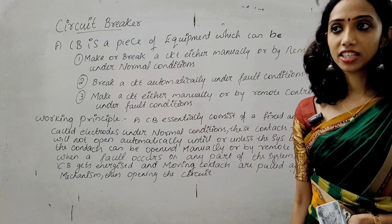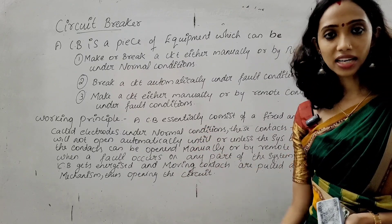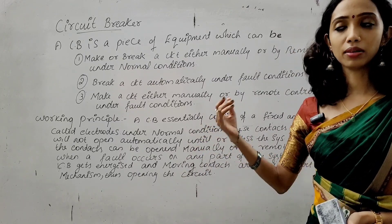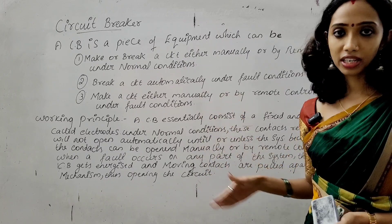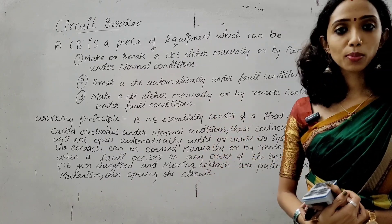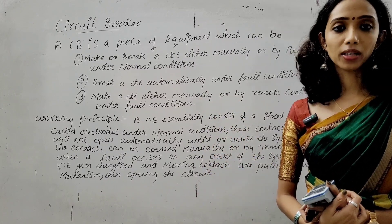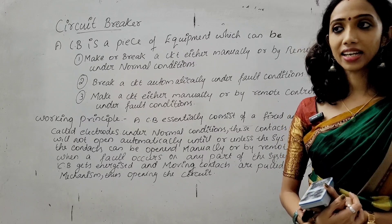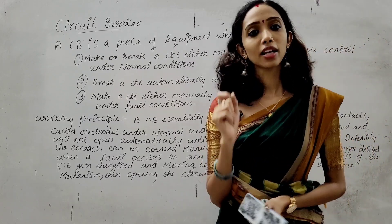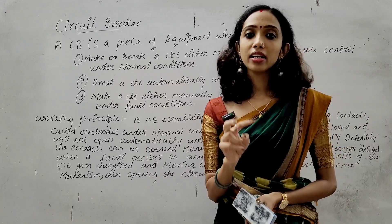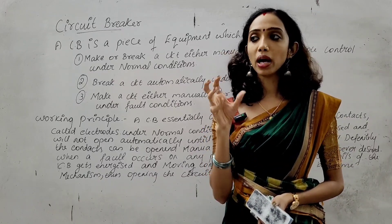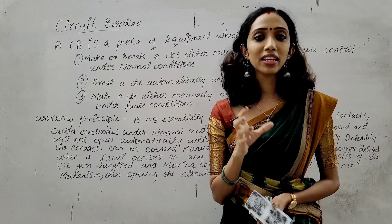I have written a paragraph here. So what is the working principle of a circuit breaker? There are two types of circuit breaker contacts: one is a moving contact and one is a fixed contact. These contacts are called electrodes.